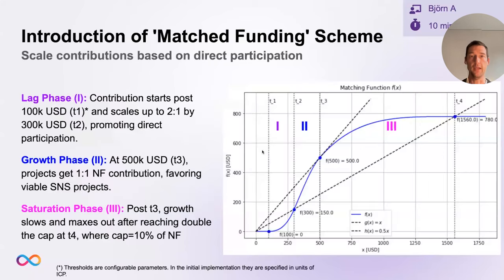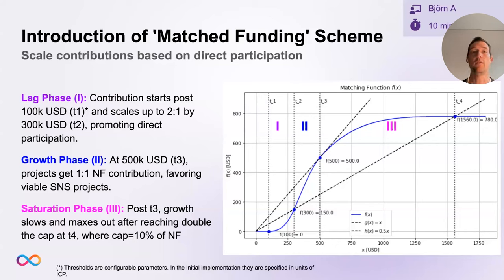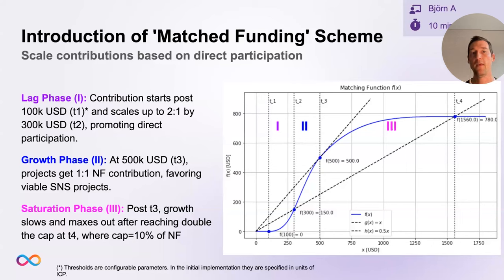Now let's come back to the matched funding scheme. The fundamental idea is simple: the contribution of the fund should scale aligned with what's collected from direct participants. Currently, the Neurons Fund contributes a fixed amount, which leads to the unfortunate situation where for quite a few SNSs the Neurons Fund provides the majority of the funds — it doesn't really consider market signals. This will now change with the matching scheme.